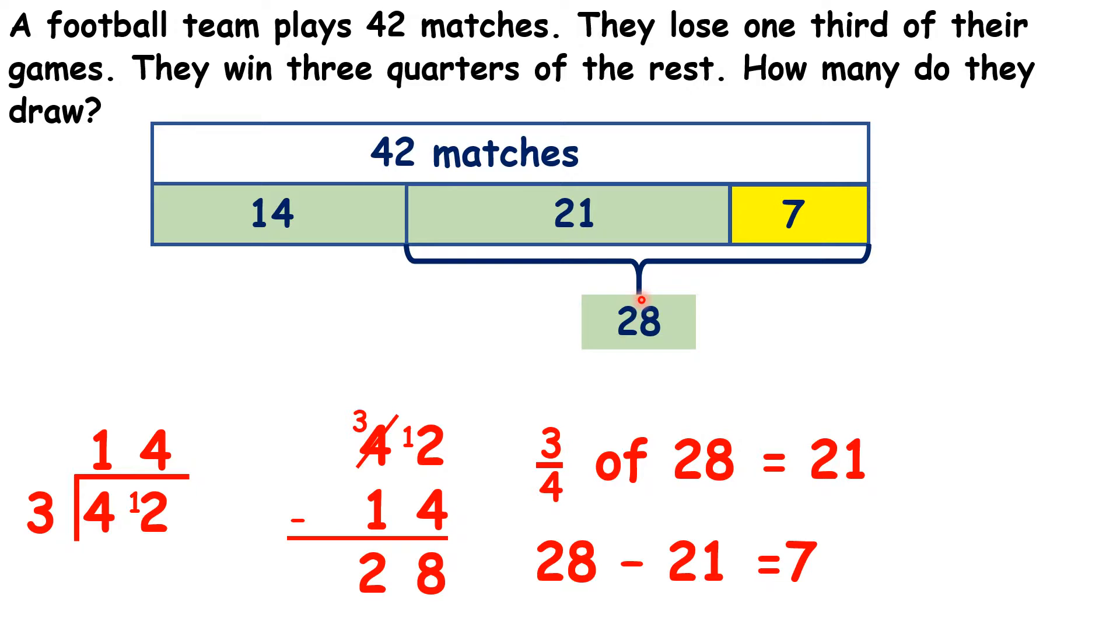But then, rather than finding one quarter straight away, they found three quarters, so they found that 21 games were won, and then subtracted this from 28, to get seven games drawn.